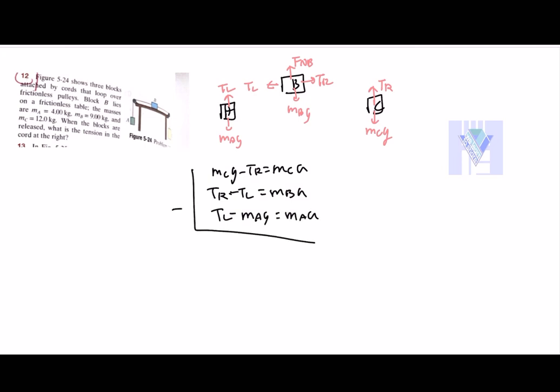And if you add all of these equations, you would have MCG minus MAG equals MA plus MB plus MC times A. And therefore you would have A equals MC minus MA multiplied by G, divided by MA plus MB plus MC.